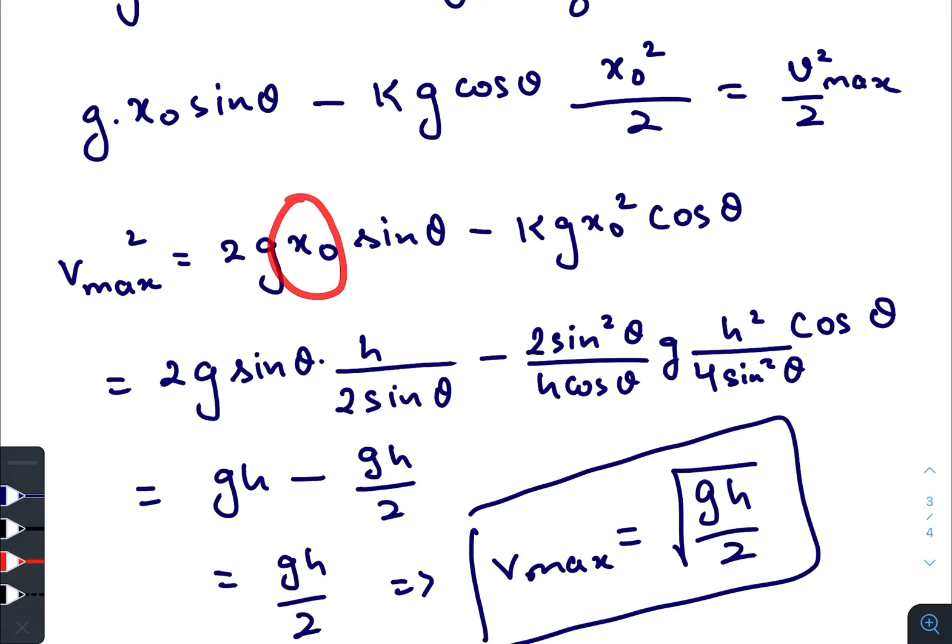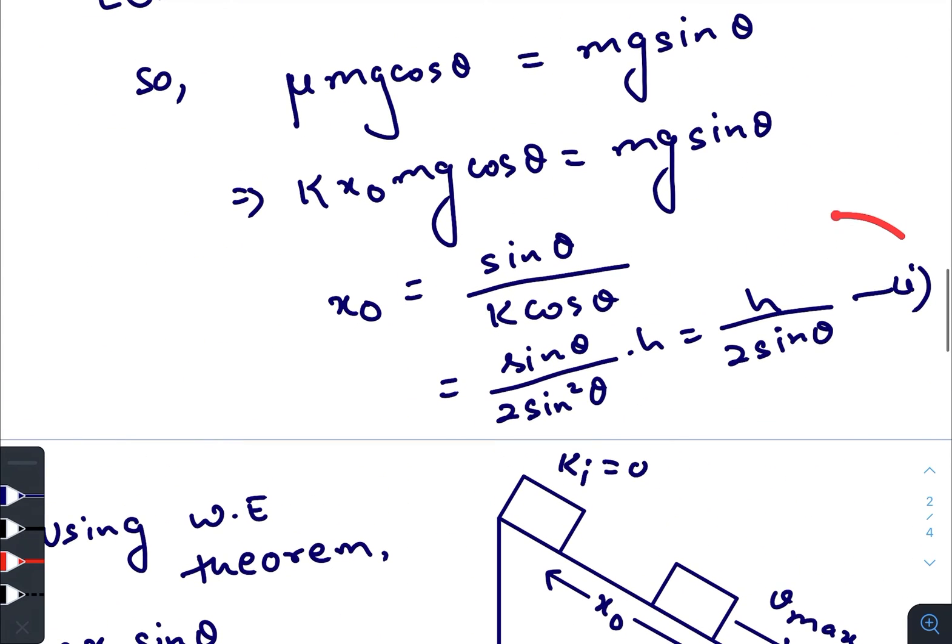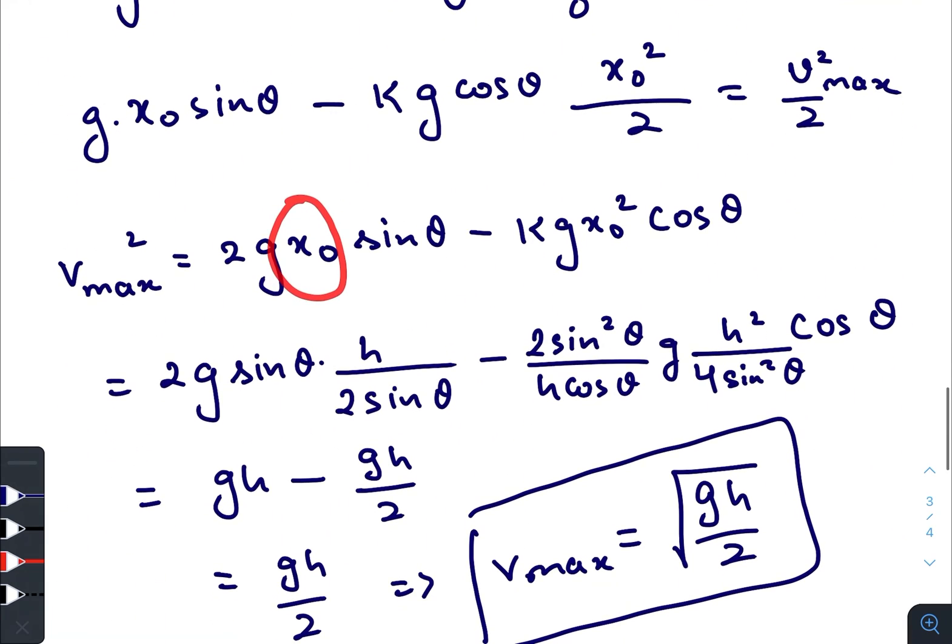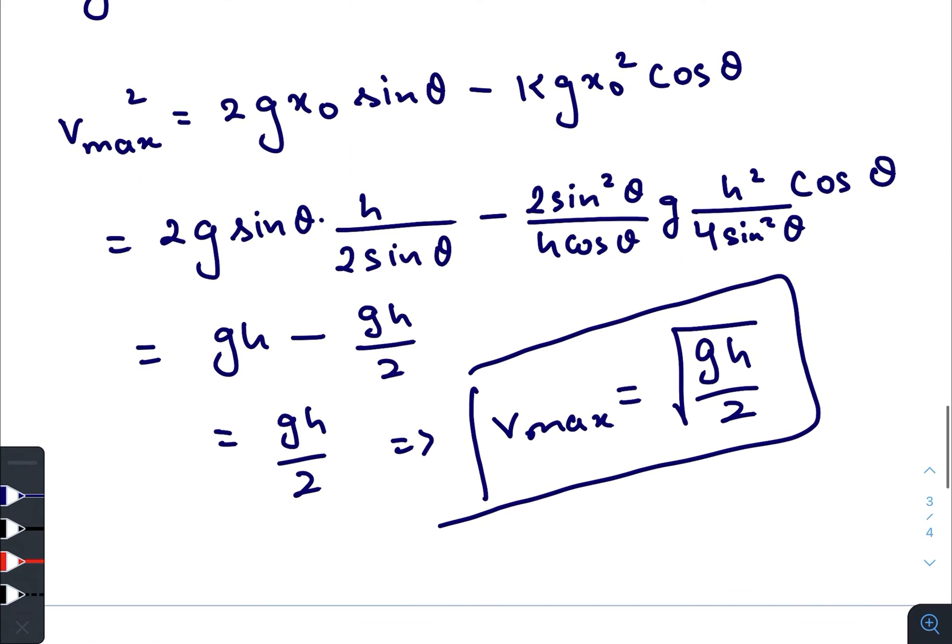Now just we will replace x₀ from the second equation and k from the first equation. So after replacing all constants, finally we get a value v_max squared equals to gh by 2. So v_max becomes root of gh by 2.